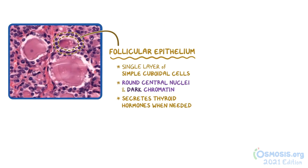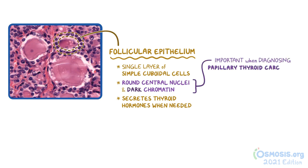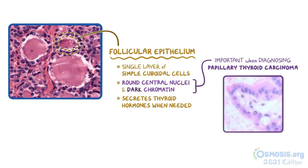The nuclear features of these cells are particularly important because they're the main feature looked at when diagnosing papillary thyroid carcinoma. In papillary thyroid carcinoma, the nuclei will be large and irregular, with light chromatin, similar to this image, which has pale intranuclear inclusions.